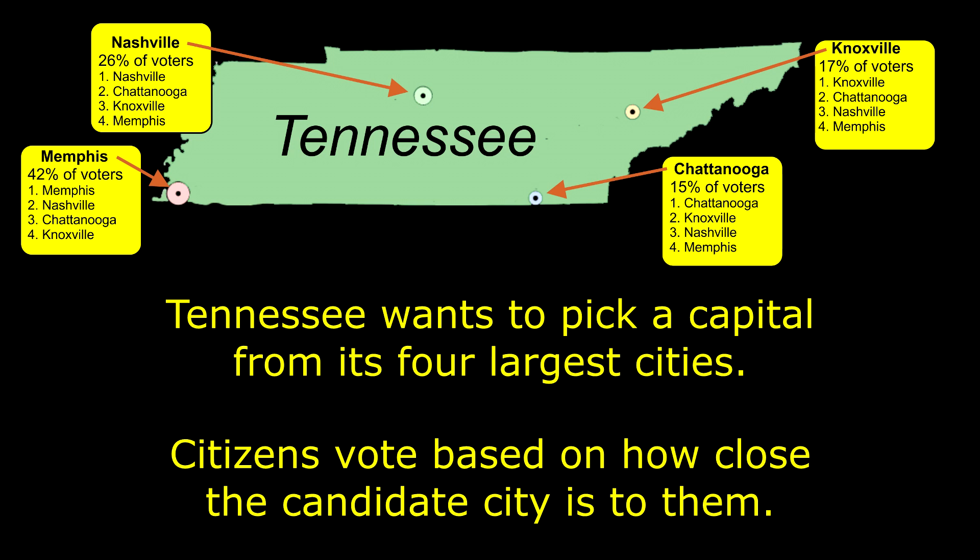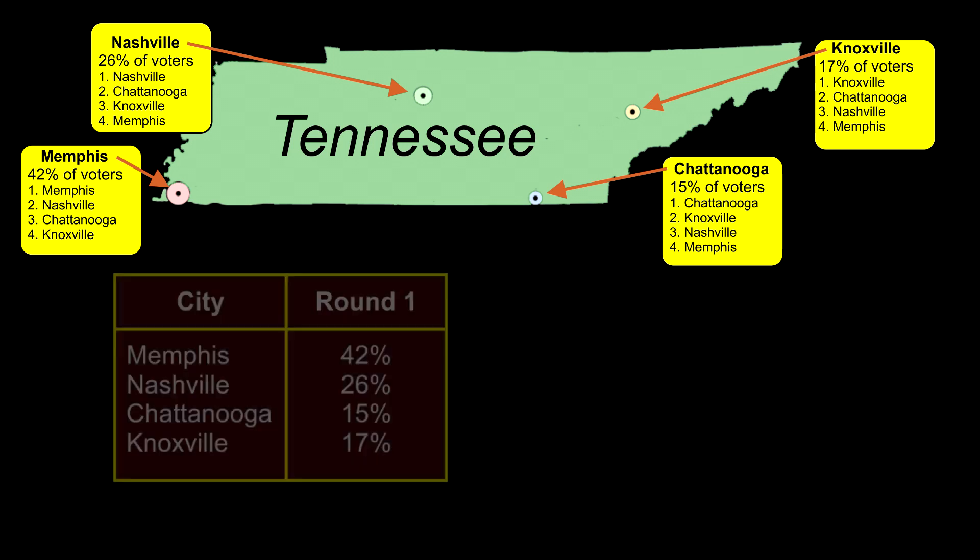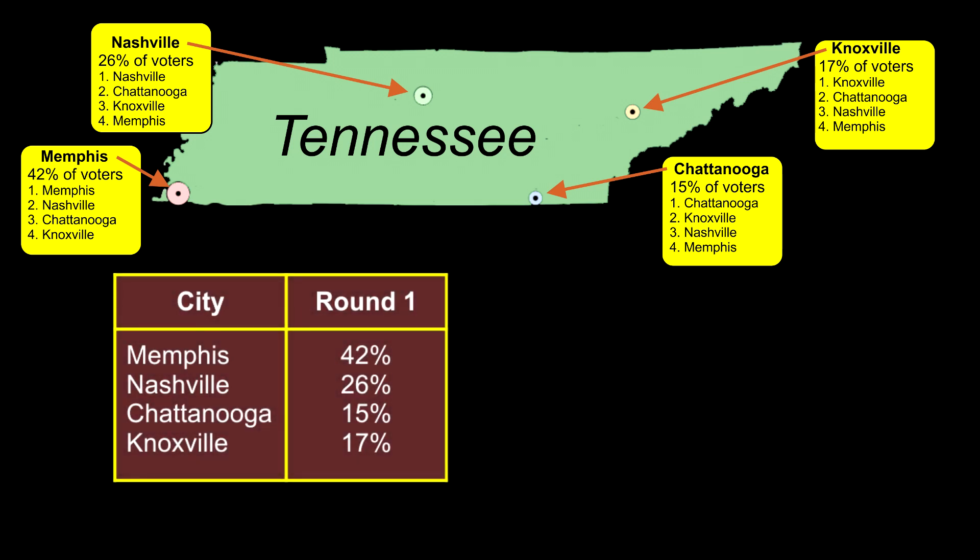Knowing this ranking, we can follow the instant runoff voting algorithm to determine the winner of the election. In round one, you just take the first choice of all the voters, and you get these results. If this was a regular choose-one voting election, we would stop here, and Memphis would be declared the winner.